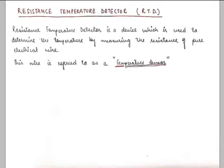Hello friends, welcome to another tutorial in the series of electronics and instrumentation. Today I'll discuss a specific type of temperature transducer known as RTD, which stands for Resistance Temperature Detector. A resistance temperature detector is a device used to determine temperature by measuring the resistance of a pure metallic wire.